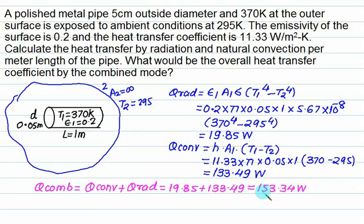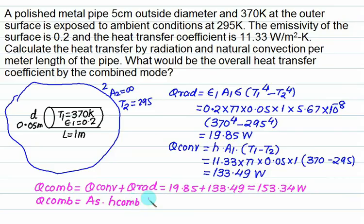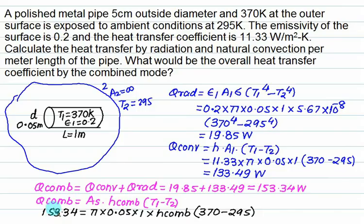The combined heat transfer is convection plus radiation, which equals 19.85 plus 133.49. The combined heat transfer is 153.34 W. This can be written as Q_combined = A × h_combined × (T1 minus T2), giving a combined heat transfer coefficient of 13.01 W/m²·K.